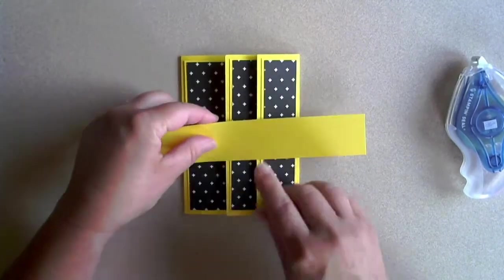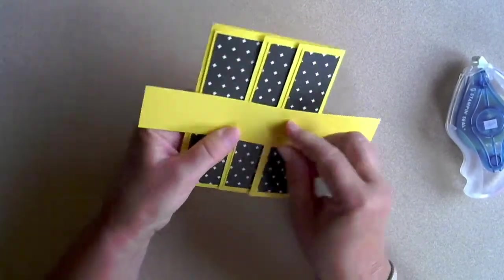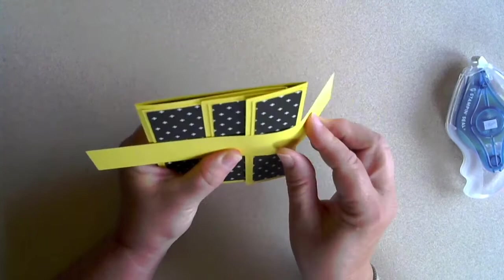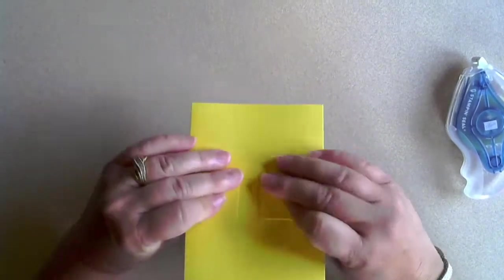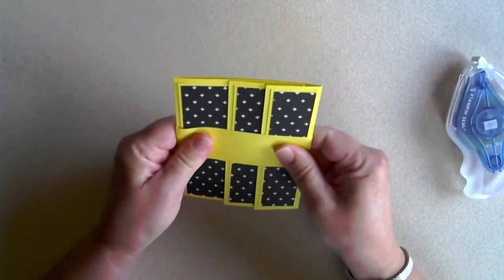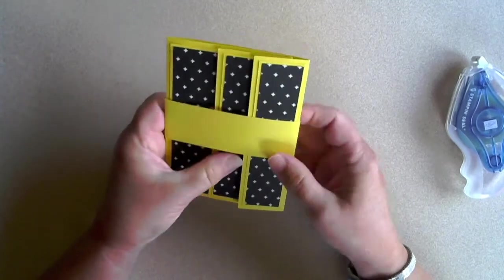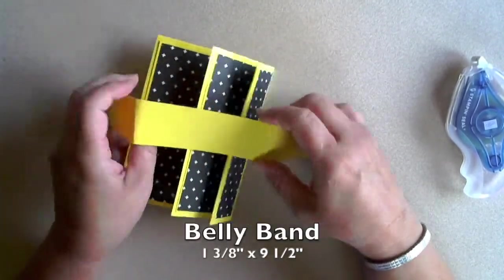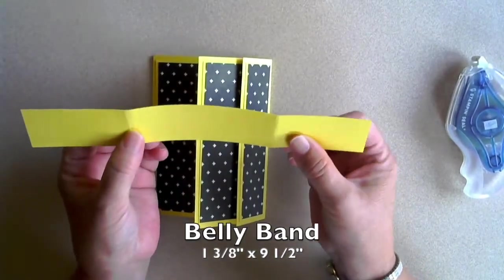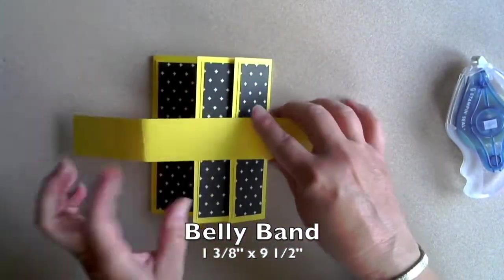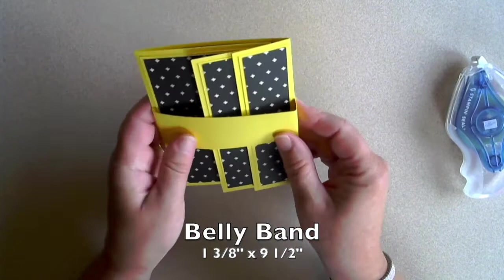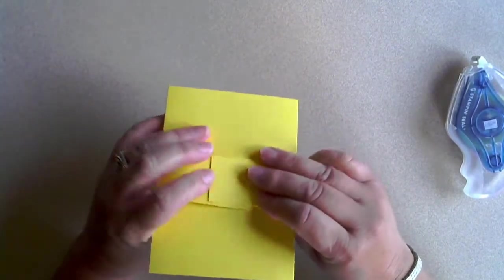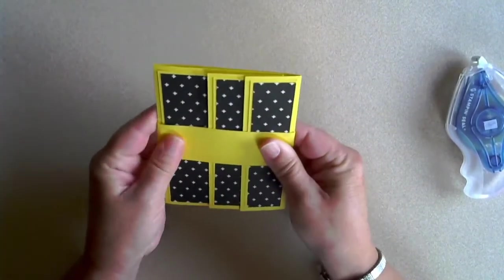So that's our base. And then our belly band is just going to wrap around. And if you want to score this, you can. I'm just going to fold it. Oh, and I apparently took the wrong, I cut it the wrong way. So I had a measurement wrong. So make the belly band nine and a half, not seven and a half. And I will go back and change that on my blog as well. And that's just going to wrap around.